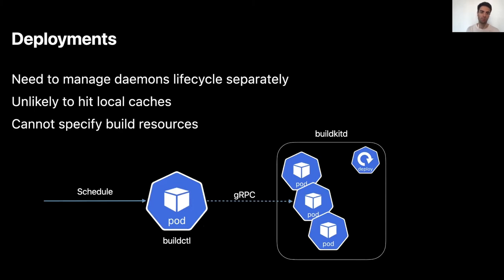With deployments, you need to manage the daemon lifecycle separately — before scheduling your build, you need the daemon alive in your Kubernetes cluster, most likely as a BuildKitD deployment with multiple replicas. Because of how deployments work, it's very hard to know on which pod your build will land, so you'll be unlikely to hit local caches. Also, because the deployment daemon is decoupled from the actual build submission, you cannot specify how much resources a specific build requires, leading to over-requesting or under-requesting and poor resource utilization.